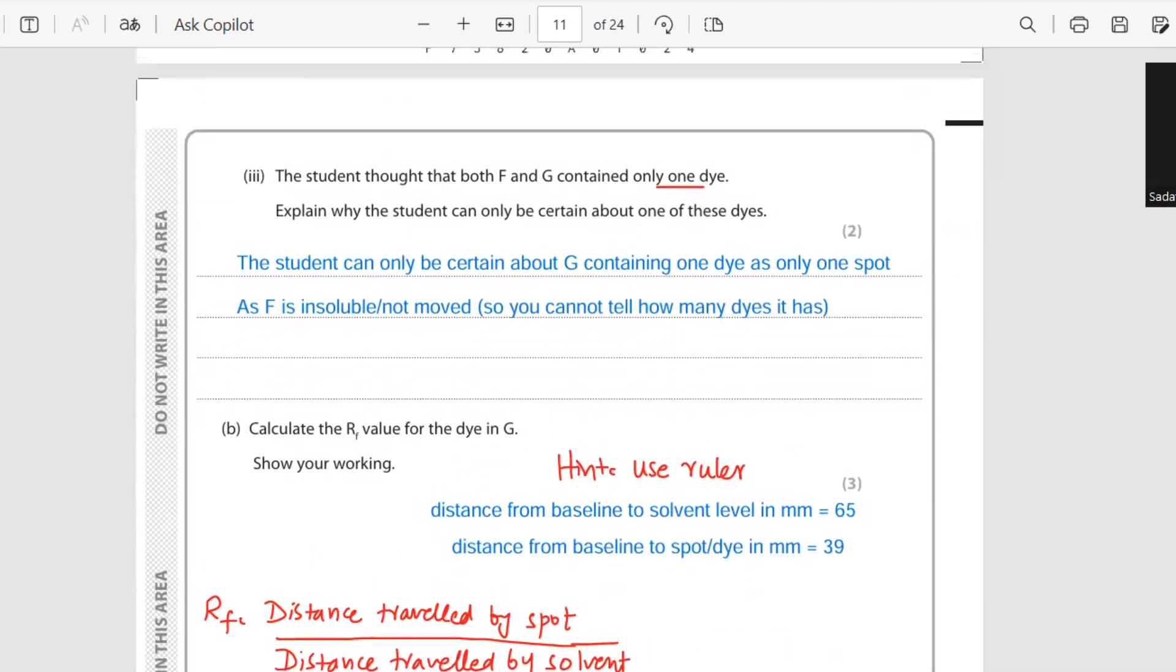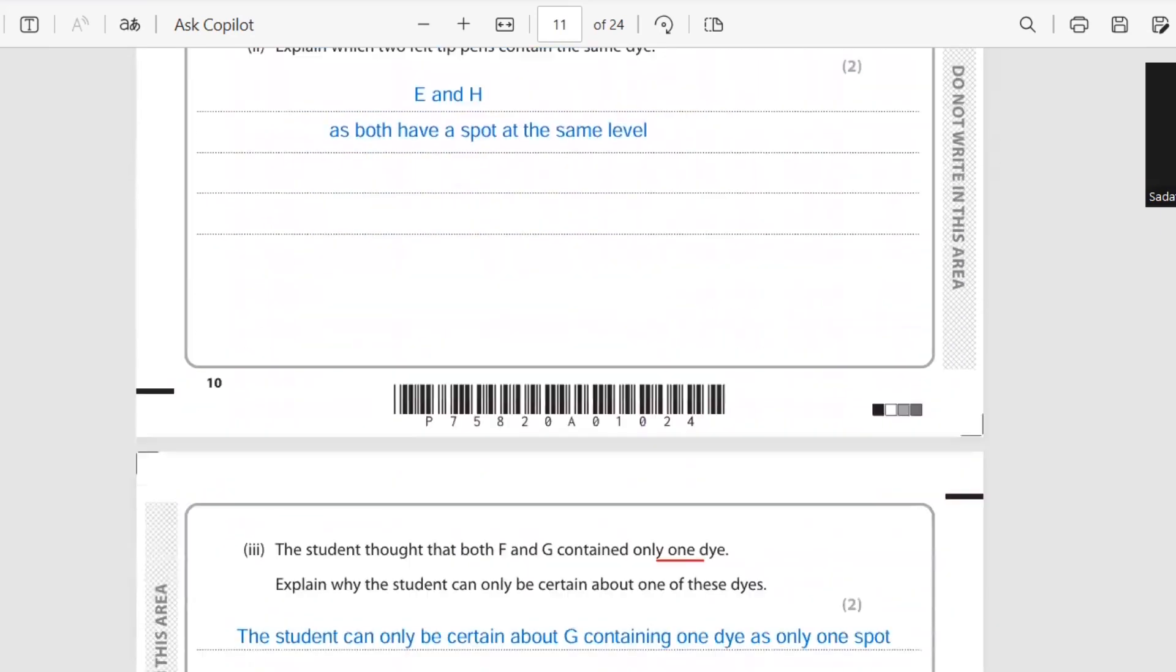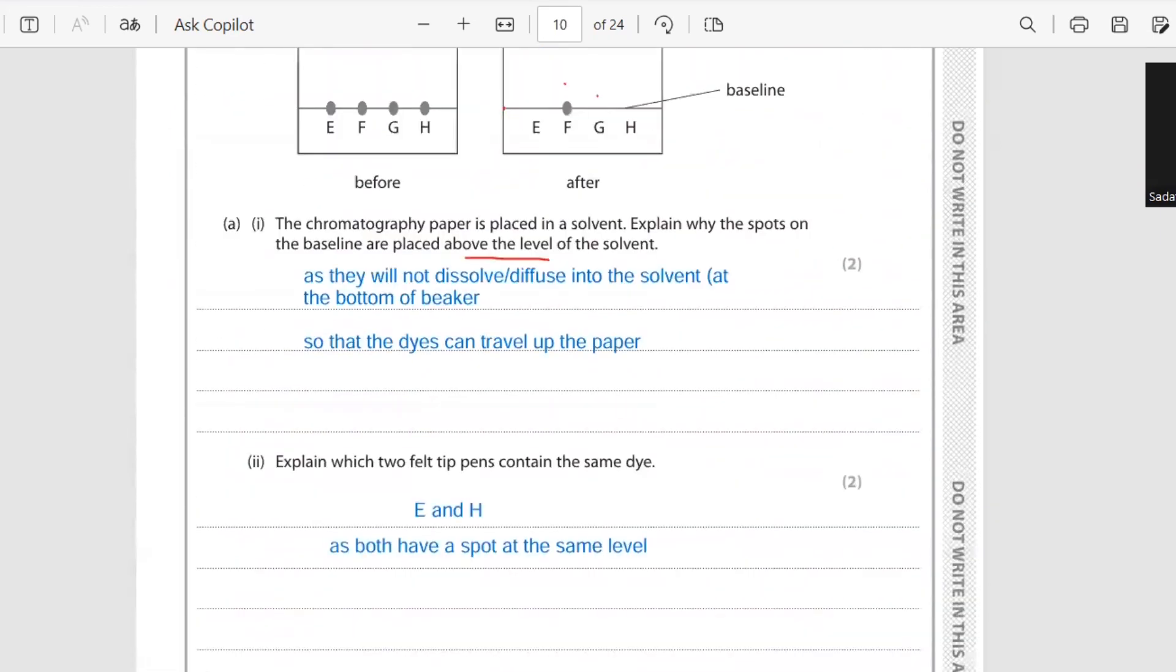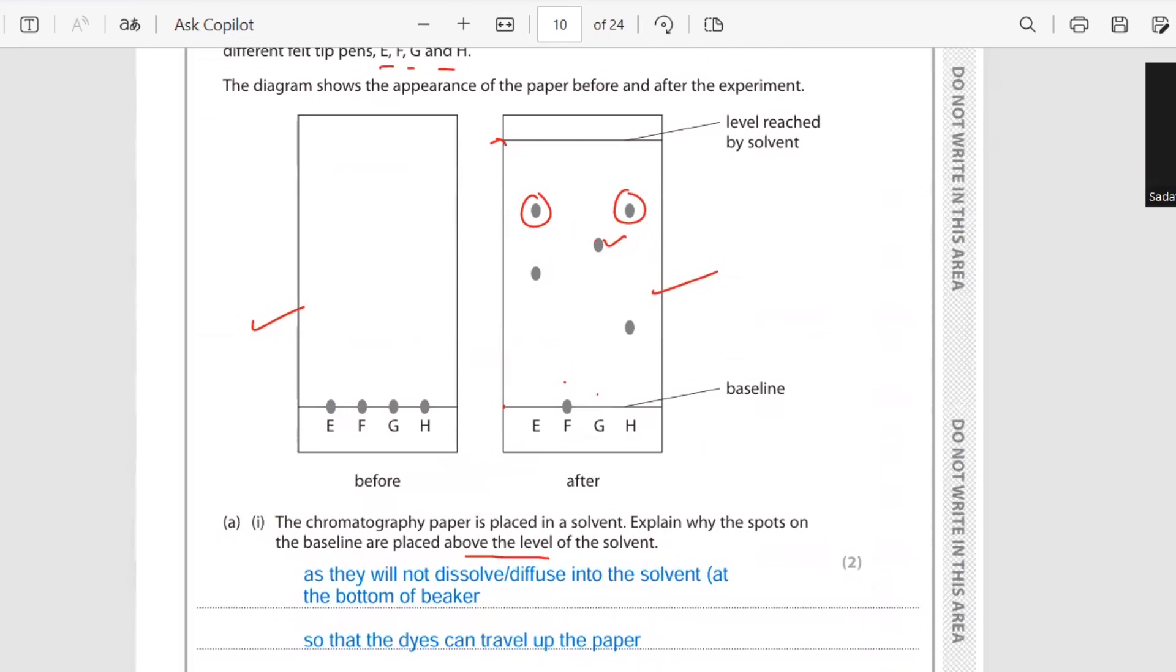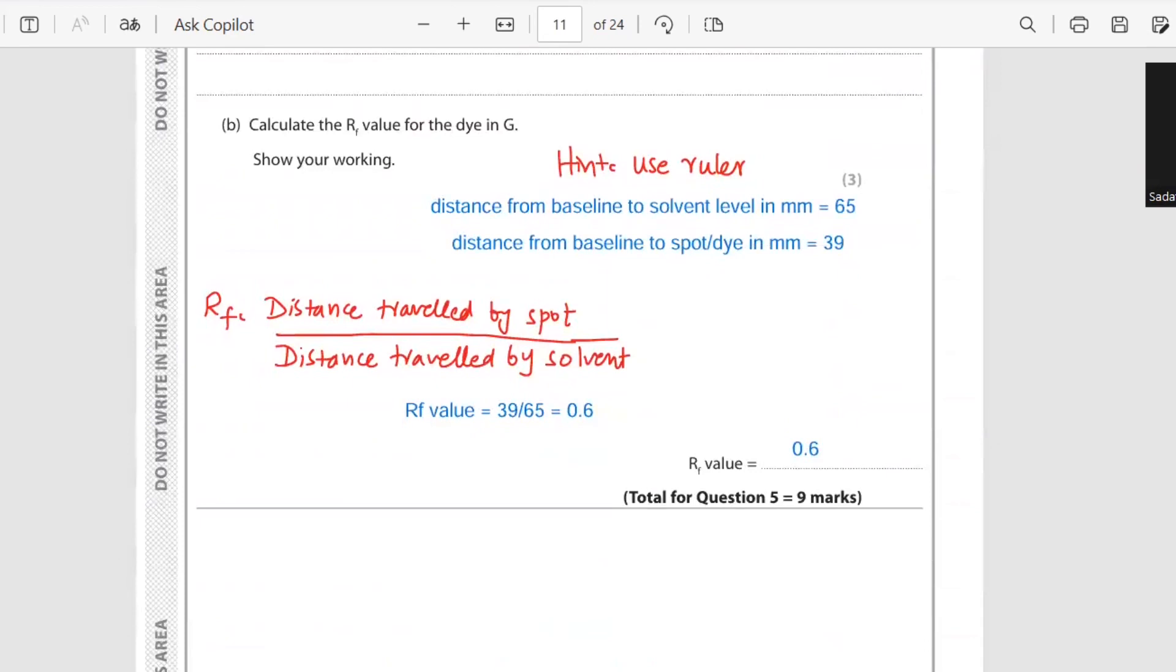Calculate the Rf value for the dye in G. Show your working. Here you have to use ruler or scale and measure the distance traveled by solvent front. This is the solvent front till the baseline. And also measure the spot, the one they said is G - this spot, measure the distance till baseline. And then you have to use the formula: distance traveled by spot divided by distance traveled by solvent. So it's 39 millimeter divided by 65, and you will get the Rf value.